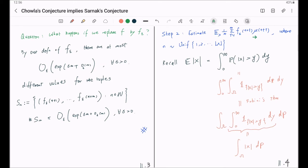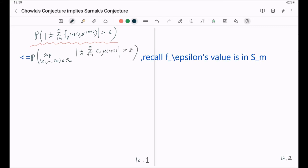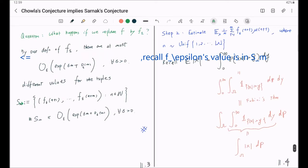So to estimate this, we are interested to look at a tail bound like this. Okay now, we are interested to know the tail bound for this. But instead, we are going to look at something more general. Recall, here S sub m is a set of opposite values for the tuples here. Now we are looking at the supremum.